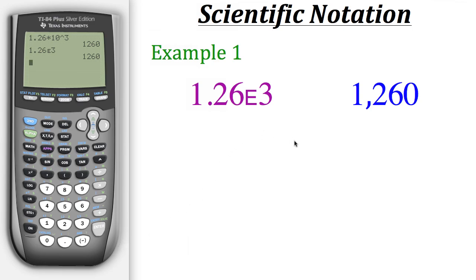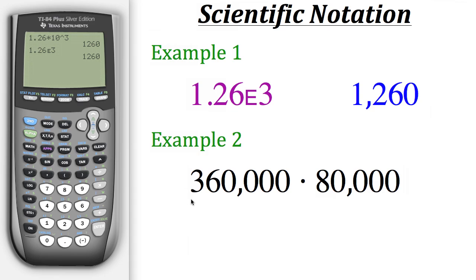So here we have 360,000 times 80,000. Now rather than typing out all these zeros, let's convert these into scientific notation. So 360,000 would be the same thing as 3.6 times 10 to the fifth...